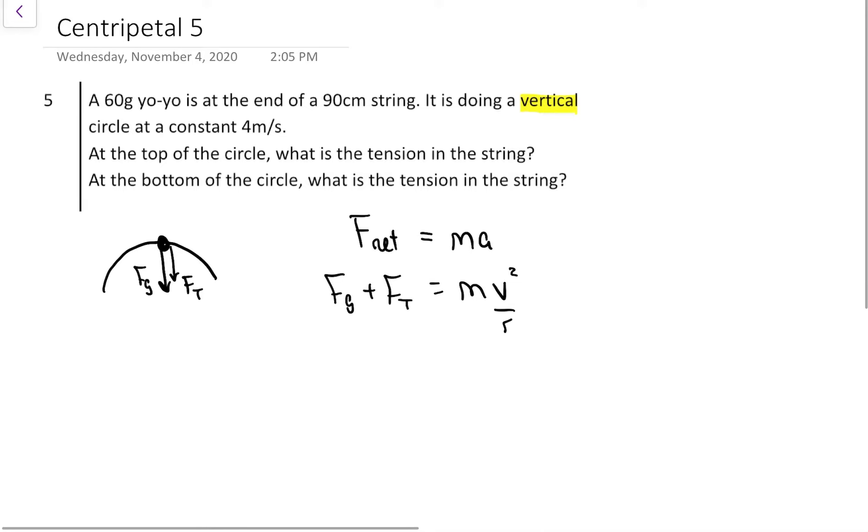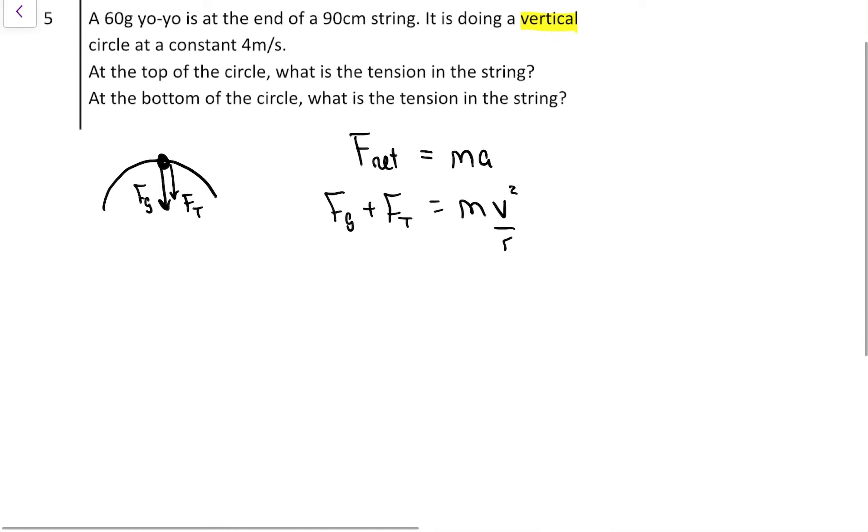Then we can just crunch out what we know. Gravity is always mg. I'm going to solve for F_T, and that's equal to mv squared over r. So the tension all by itself is going to be the mass multiplied by the v squared, which in this case was 4, divided by the radius of 0.9 meters.